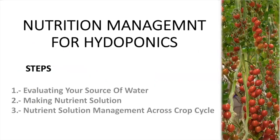So which are the steps to follow to do a correct management of nutrition in hydroponic systems? First, we need to always — at least for commercial applications — test the water source. A bad source of water can cause a lot of problems in the following steps, including problems maintaining the EC levels when making the nutrient solution, and can make a nightmare of the management across the crop cycle.